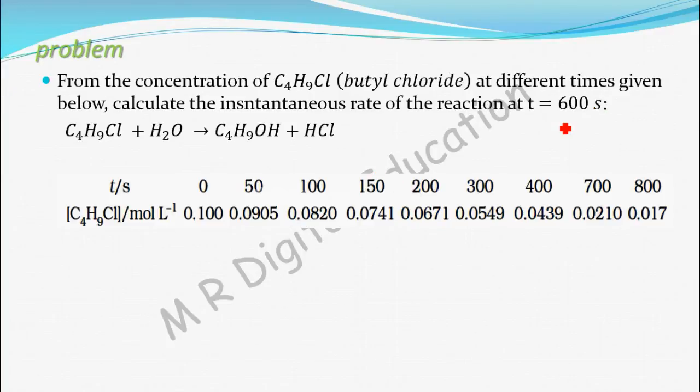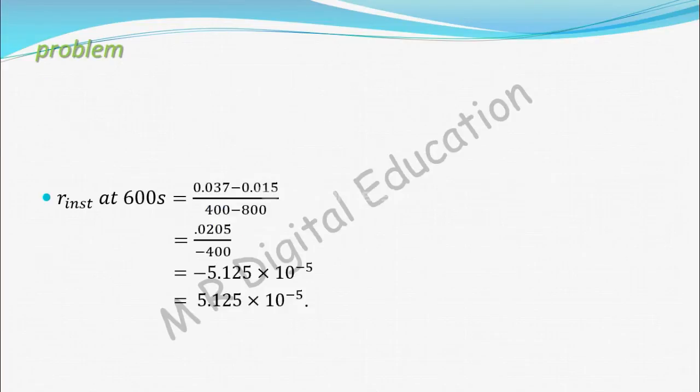We have to calculate instantaneous rate at time t = 600 seconds. To find instantaneous rate, you have to draw a graph of concentration versus time. From this data, you draw a concentration versus time graph.